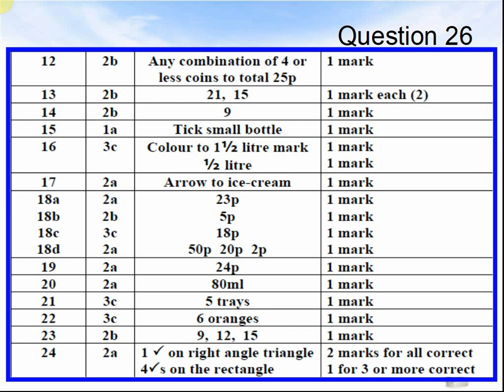Question 18A: 23p. Question 18B: 5p. Question 18C: 18p. Question 18D: 50p, 20p, 2p. Question 19: 24p. Question 20: 80ml. Question 21: 5 trays. Question 22: 6 oranges.